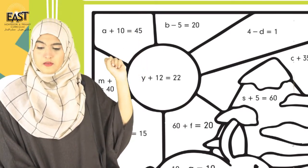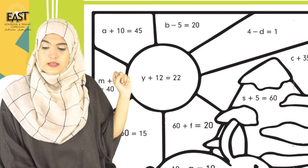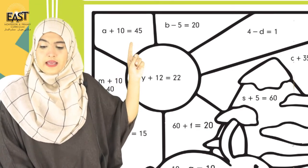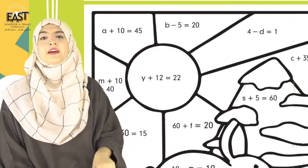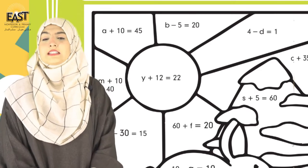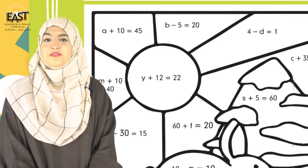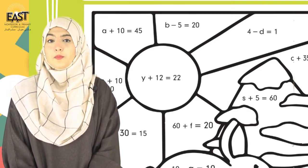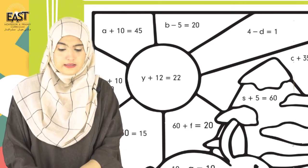For example, a+10=45. Solve pehle karnei sawal ko. Kis tarah solve karnei? a+10=45. Aapko yaad hai, chapter number 5 karna shuru kiya, the rule of operator humne padha tha.